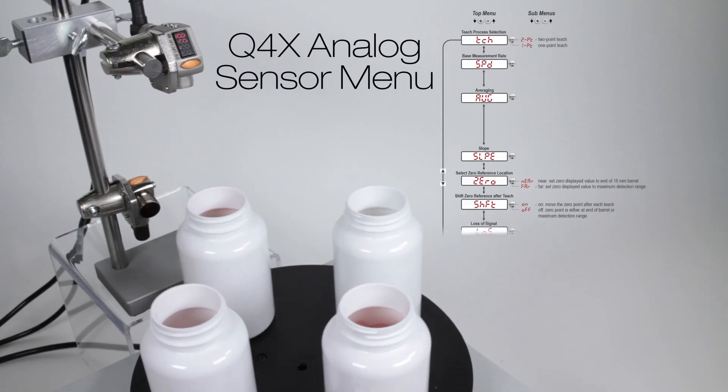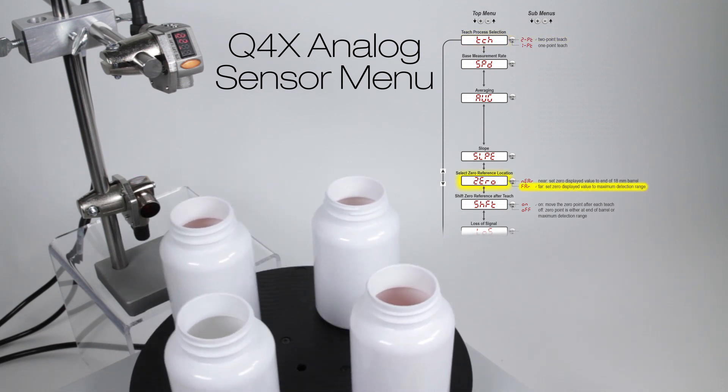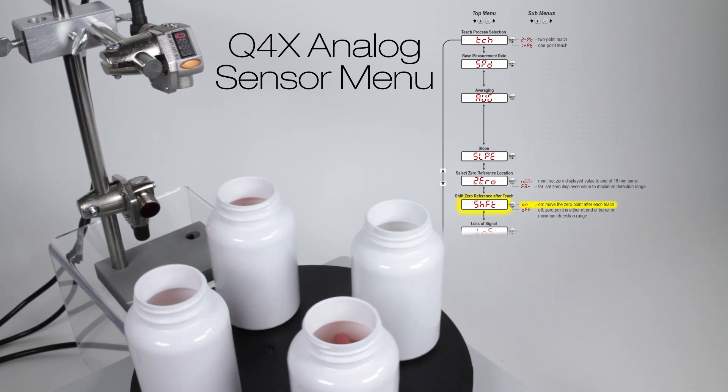By default, the analog Q4X sensor is set up for two-point teach. For this application, the display zero has been set to VAR, and the reference shift option has been turned on.